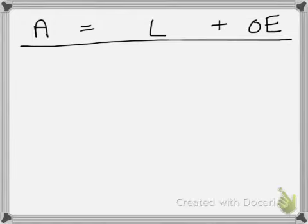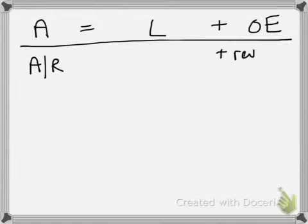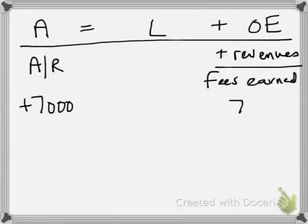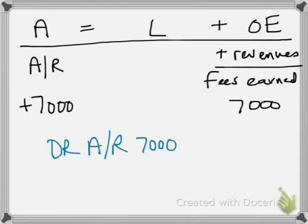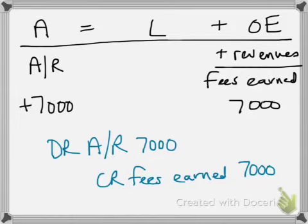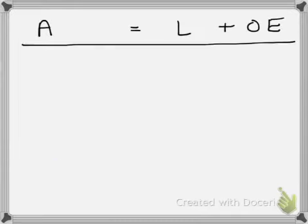The sixth transaction was we performed services, but this time it was not for cash — it was on account — and the dollar amount was seven thousand dollars. So instead of debiting cash, we would debit accounts receivable seven thousand and credit fees earned, that revenue account, for seven thousand dollars. In accrual accounting, when you perform the service is when you record the revenue; it's not necessarily when the cash exchanges hands.